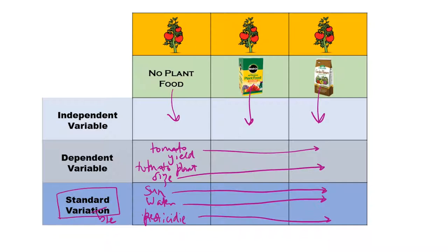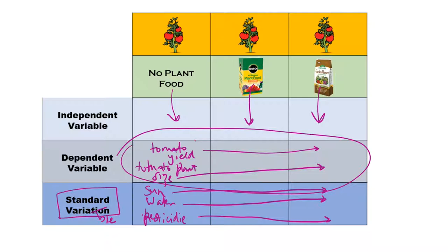At the end of the experiment, I'm going to measure the dependent variables and see if they support my hypothesis or not. If I don't see a difference, then I can say I reject my hypothesis. If I do get better tomato yields with Miracle-Gro, then I would say I fail to reject my hypothesis. But at that point it doesn't make it absolutely true — the experiment would need to be repeated many times. After it's been repeated many times, then you might develop a theory.